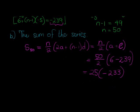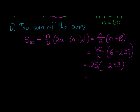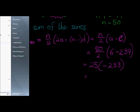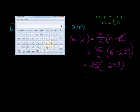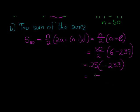And when I calculate that, I get—well, let's use our calculator. 25 times 233 negative gives me negative 5825.